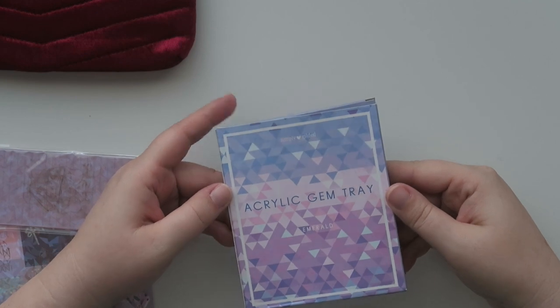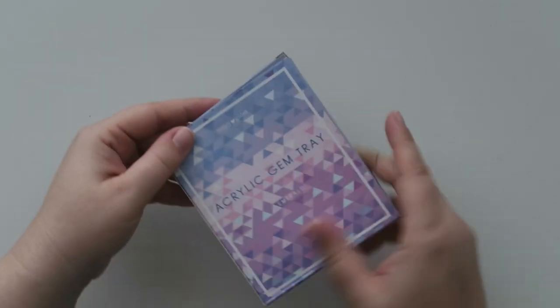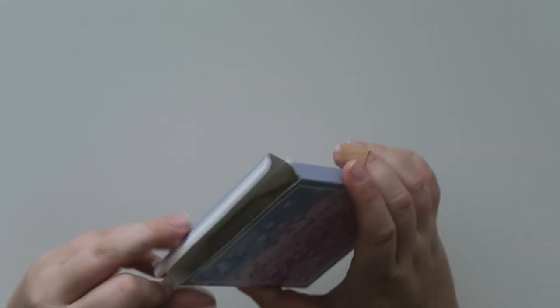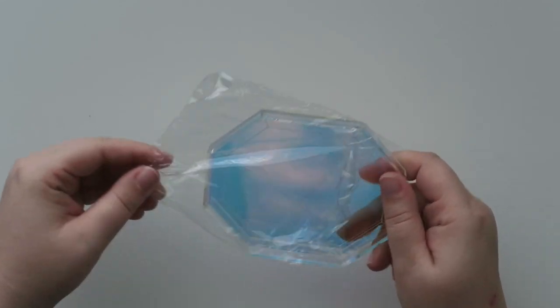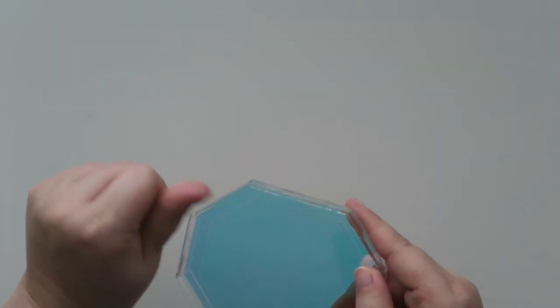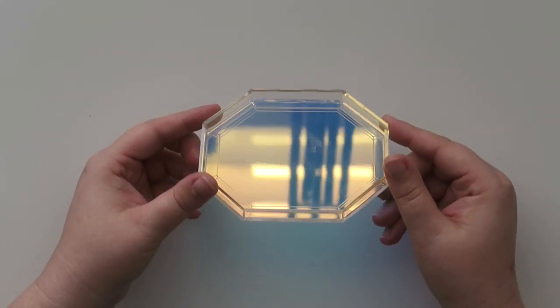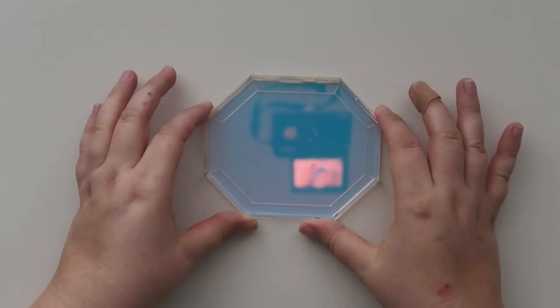Here is the acrylic gem tray. I'm gonna move some things off of the camera. So yeah, so this is the acrylic gem tray. Like I said, I've seen all of it before. It's acrylic, it's not super thick, but I think this would be really pretty for in your bathroom if you want to put like your jewelry on it. You guys can see yourselves right now. So check that out.